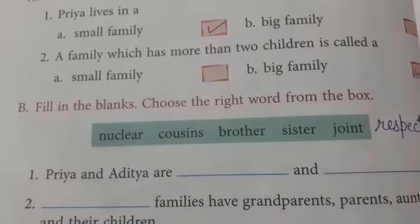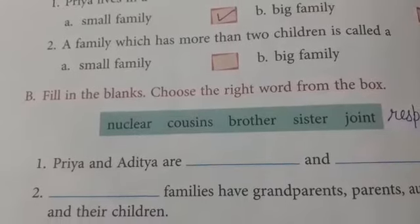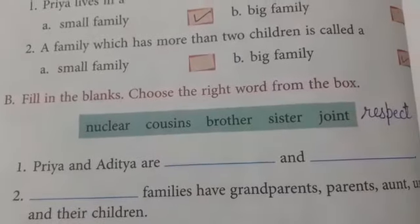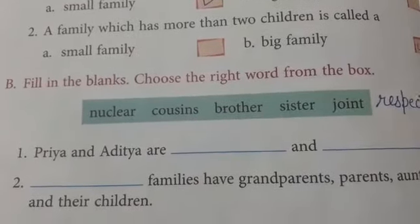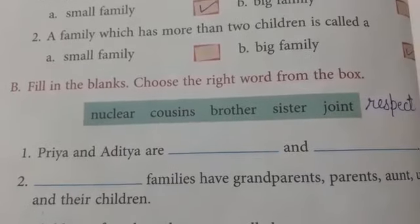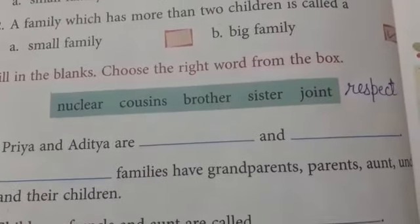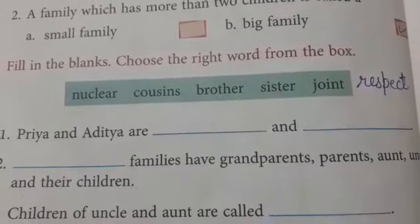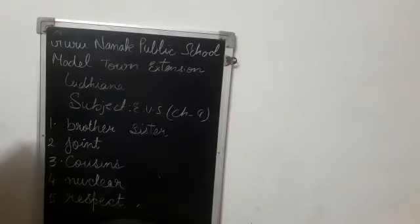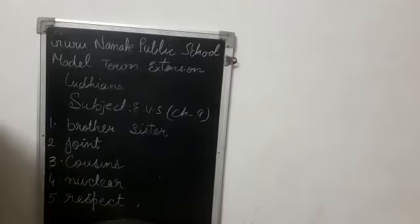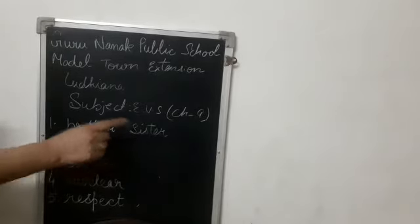Point B is fill in the blanks. Choose the right word from the box. Options are: nuclear, cousins, brother, sister, joint. Now students, add the word respect here as well. Number 1 is Priya and Aditya are dash and dash — two blanks. In the first blank, you will write brother. And in the second blank, you will write sister.